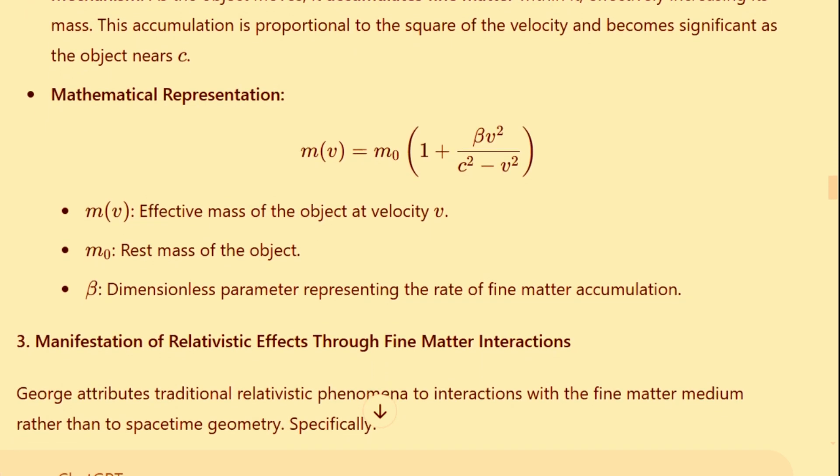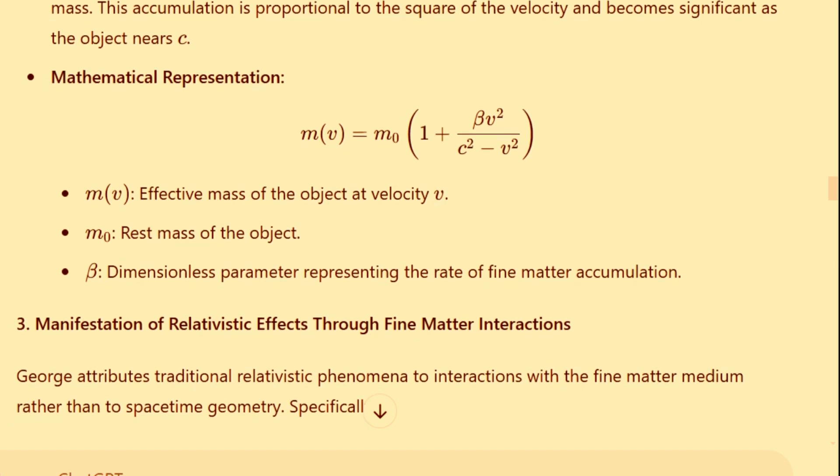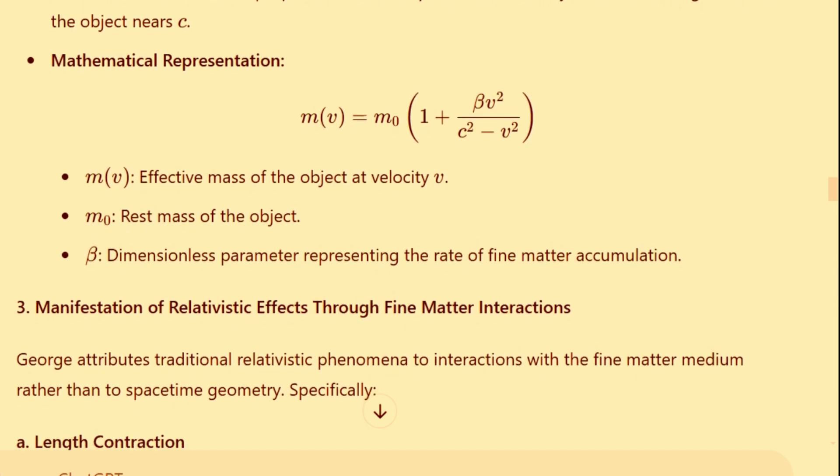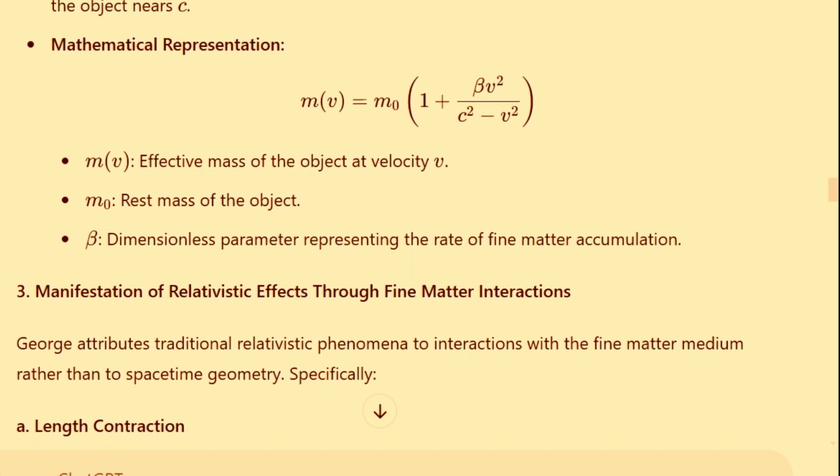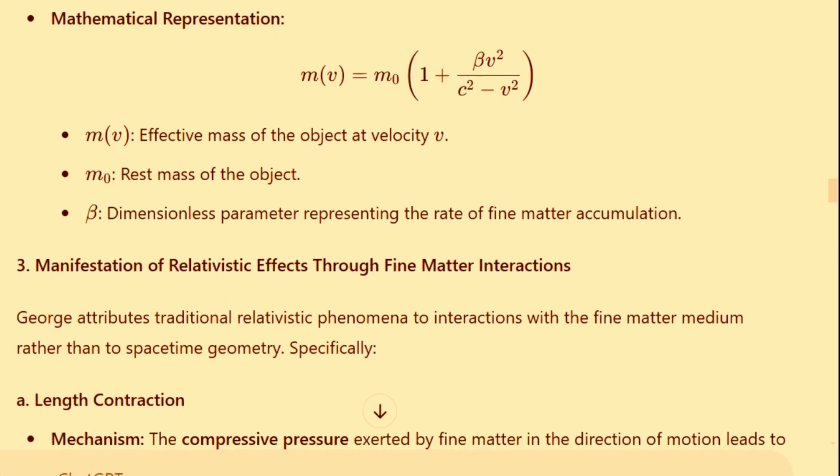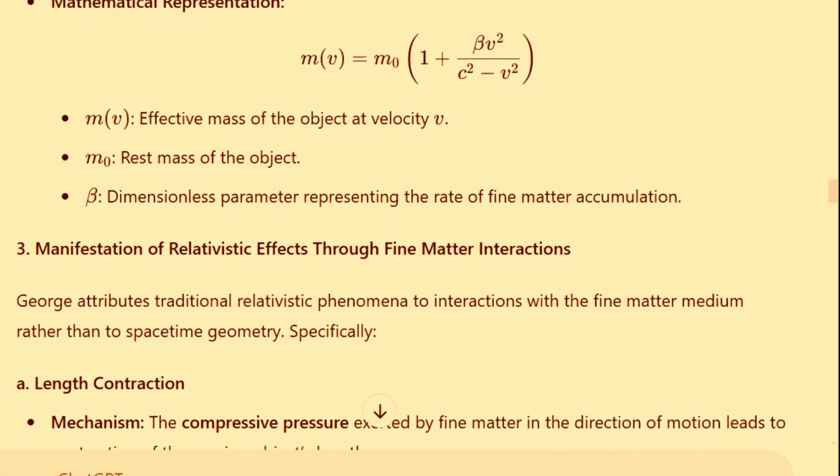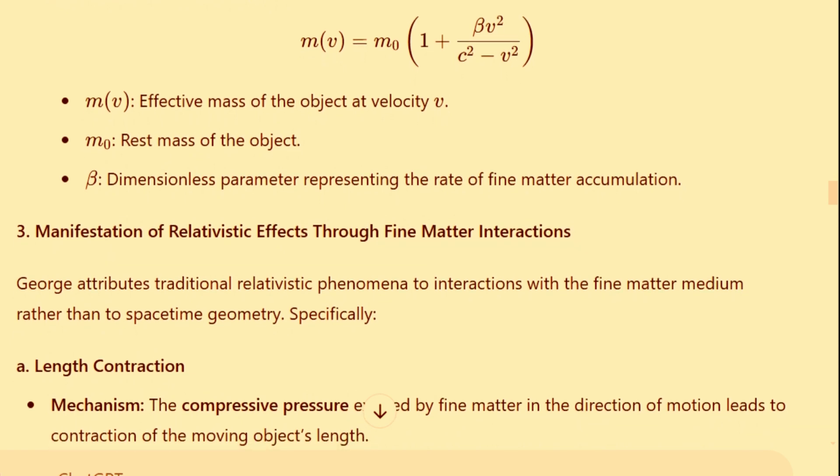Mathematical representation: the effective mass of the object at velocity v, represented as m of v, is given by the equation m of v equals m0, multiplied by the quantity 1 plus the fraction beta times v squared, over the difference c squared minus v squared.